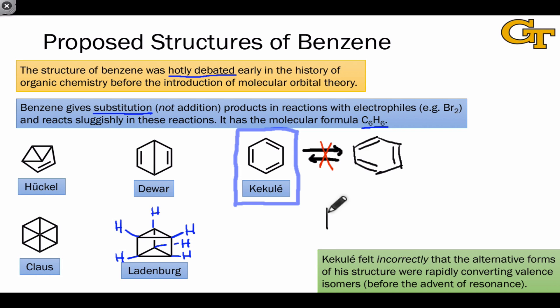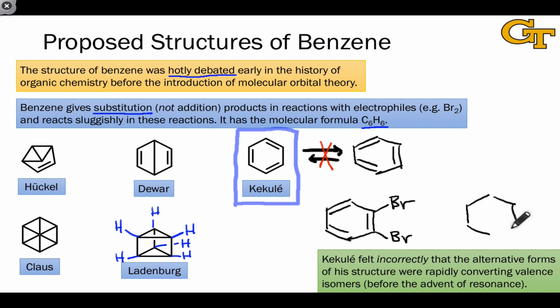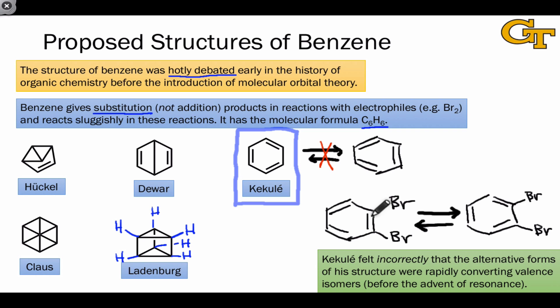Later experiments and all evidence since Kekulé's time showed that this is not actually an equilibrium between two structures. One piece of empirical evidence involves substituted benzenes such as 1,2-dibromobenzene. If Kekulé's idea were correct, there should be two isomers of 1,2-dibromobenzene differing in the positions of the double bonds, and we should be able to observe them distinctly spectroscopically — for example, in an infrared spectrum, since one bond would be a double bond and the other a single bond. Here again, this isn't what's observed.